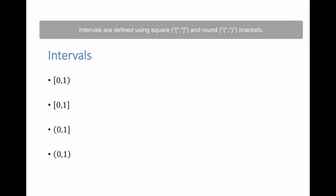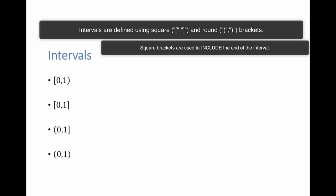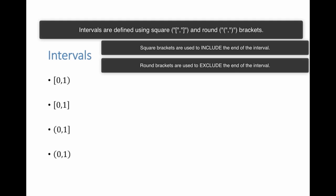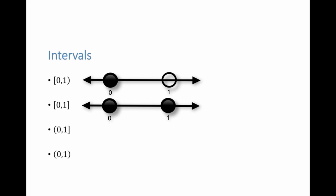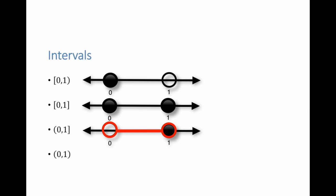Intervals of real numbers are defined using square and round brackets. Square brackets are used to include the end of the interval; open (round) brackets are used to exclude the end. For example, the interval [0, 1) means all real numbers between 0 and 1, including 0 and excluding 1. The interval [0, 1] means all real numbers between 0 and 1, including both. The interval (0, 1] means all real numbers between 0 and 1, excluding 0 and including 1.